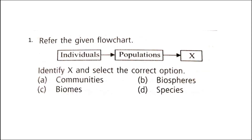Question number one: refer the given flowchart — individuals to populations to X. Identify X and select the correct option. The correct answer is option A: Communities. A natural association of interdependent populations of different species inhabiting a common environment or habitat as a viable self-contained unit is called a biotic community or biocoenosis.